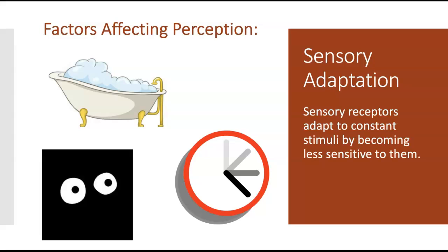This is important because without sensory adaptation, we would literally be bombarded with sensory information constantly. You would constantly feel the pressure of clothes on your body and constantly hear all of these little different sounds around you. Instead, our sensory receptors adapt to constant stimuli and become less sensitive so that we're not being overwhelmed. For example, if you don't usually wear a watch and you start wearing one, you'll initially be aware of it, but over time as those receptors adapt, you'll be less aware of the feeling of the watch.